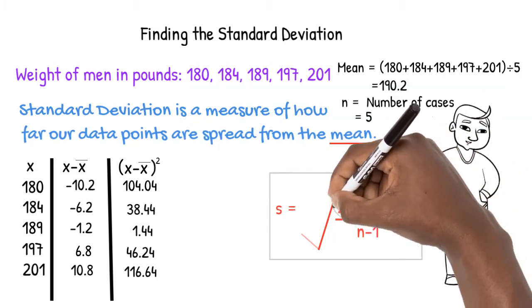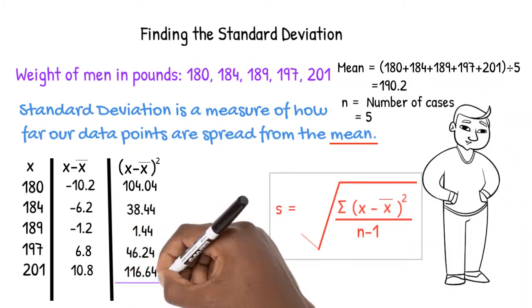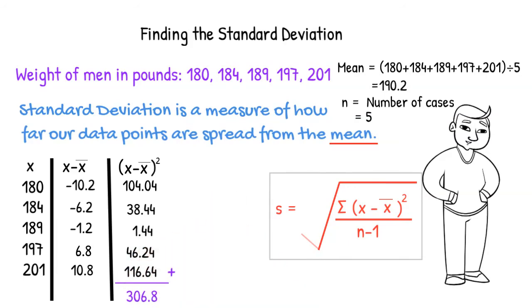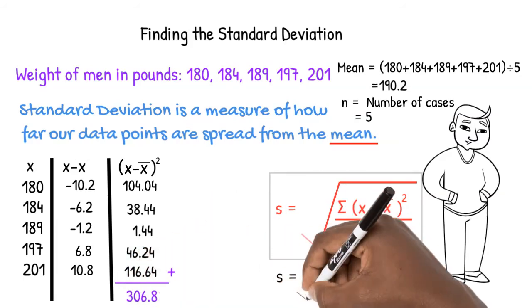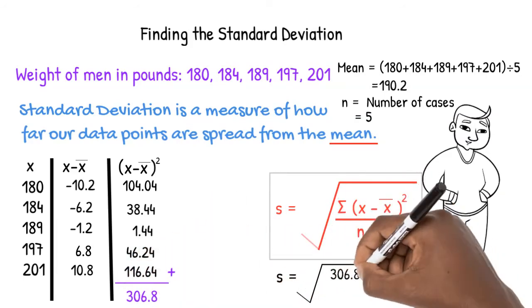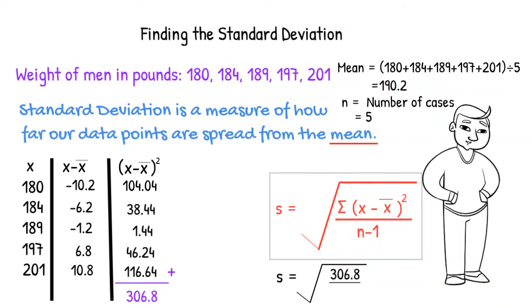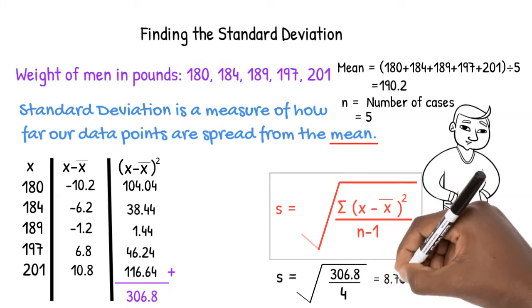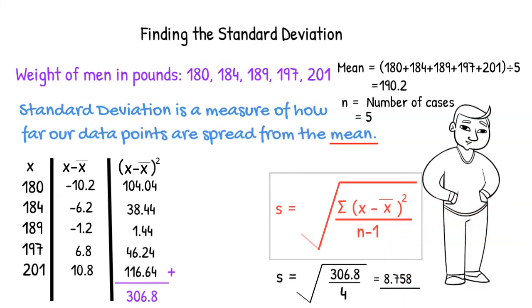Now we can find the sum of our last column to plug it into our formula. Standard deviation, S, is equal to the square root of 306.8 divided by 4, the number of cases minus 1. Our standard deviation is approximately 8.758.